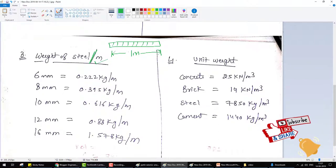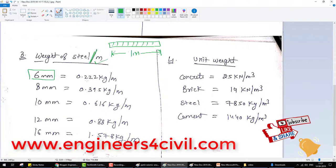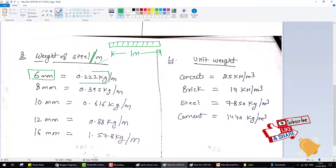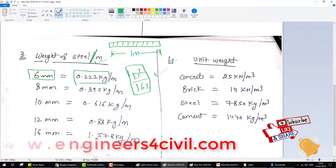For 6mm diameter, it means 0.222 kg weight of 1 meter bar of 6mm dia. How can we calculate this? Simply, you calculate by a formula: d squared divided by 162 equals 0.222. You can calculate the weight of any diameter bar by this formula.